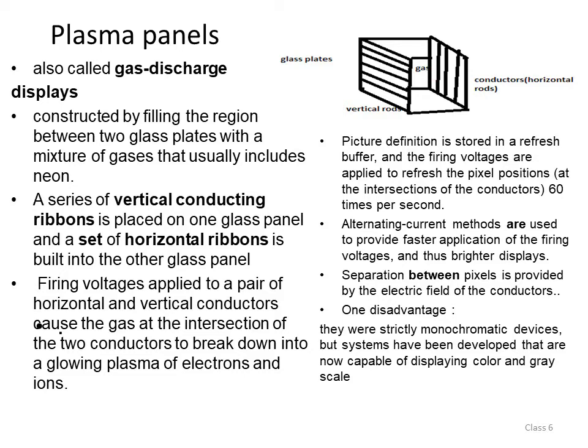The picture definition is stored inside a refresh buffer, and the firing voltage is applied to refresh the pixel positions at the intersection of the conductors 60 times per second. Alternating current method is used to provide faster application of firing voltage, resulting in a brighter display. The separation between pixels is provided by the electric field of the conductor. A disadvantage is that they are strictly monochromatic devices, but systems have been developed that are now capable of displaying color and gray scale.